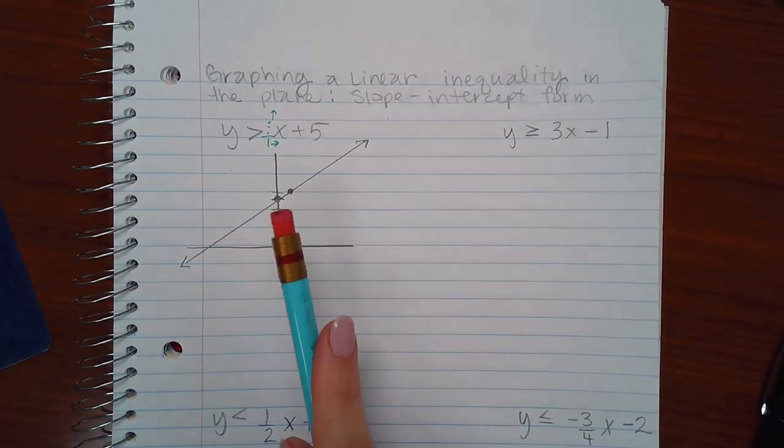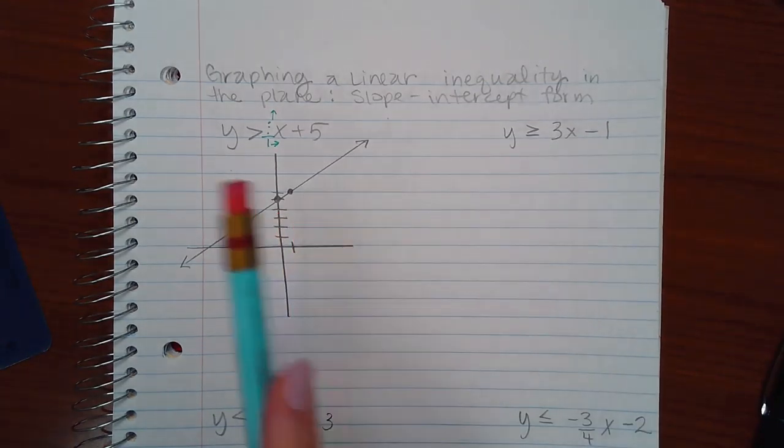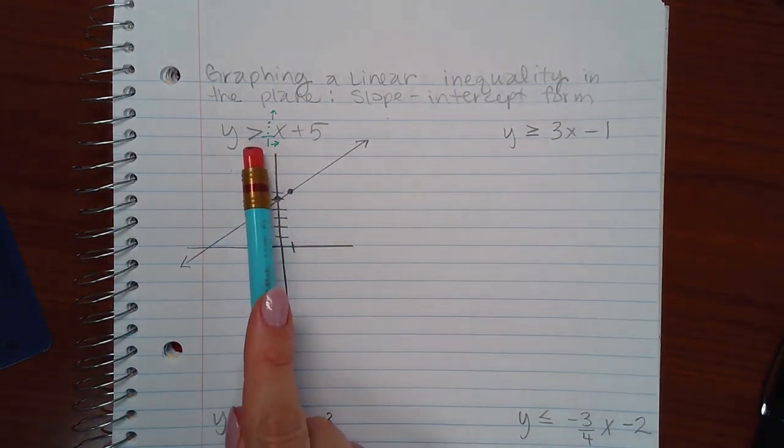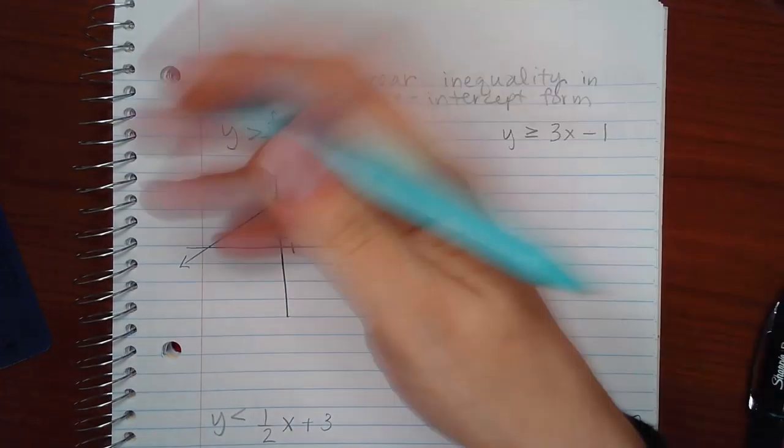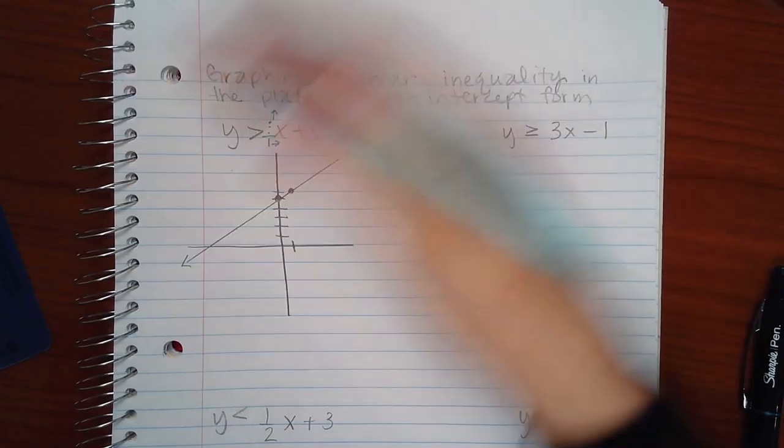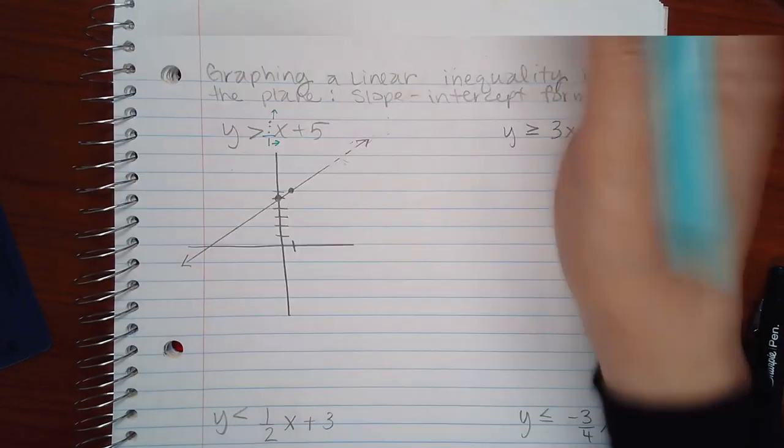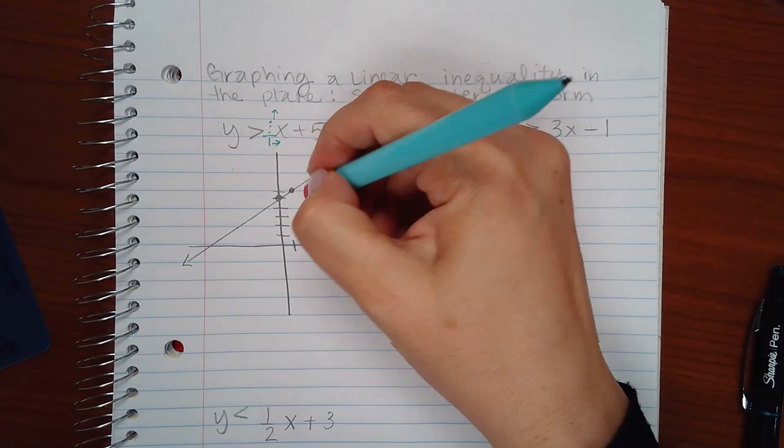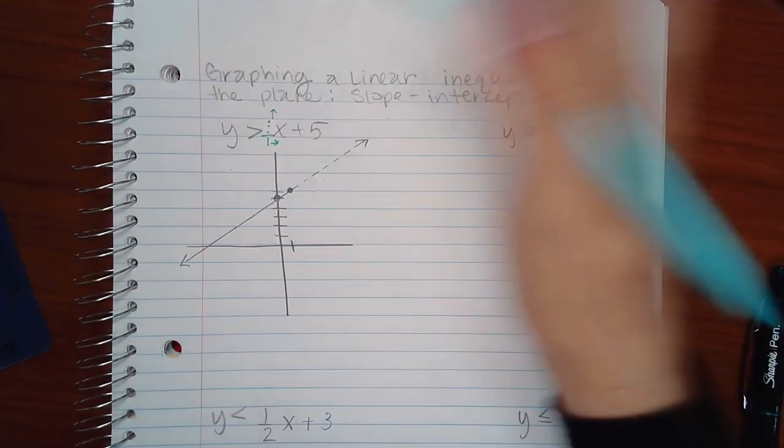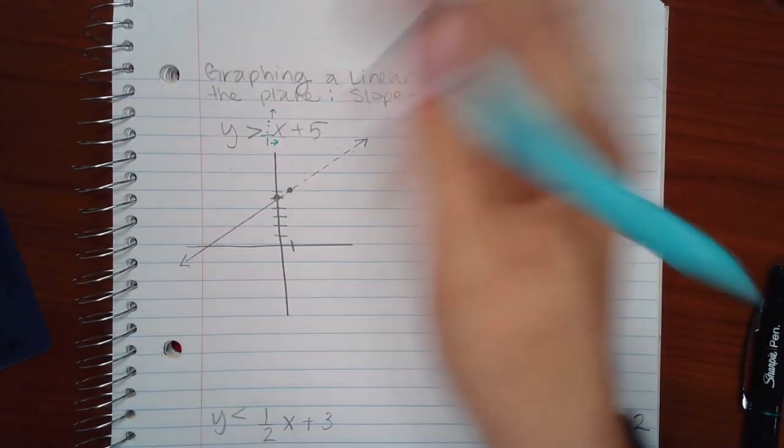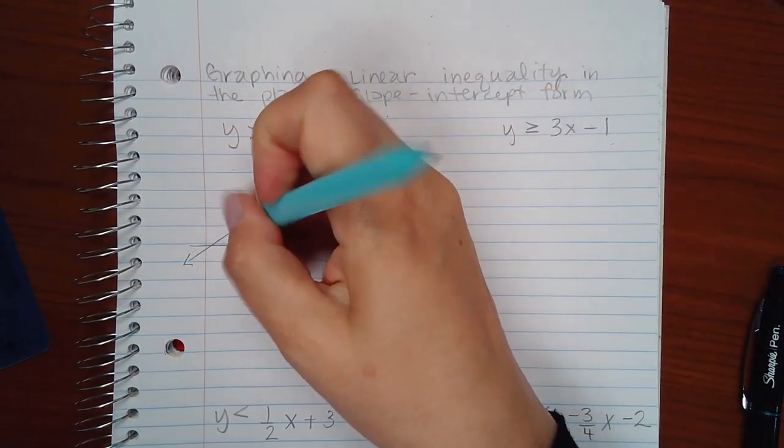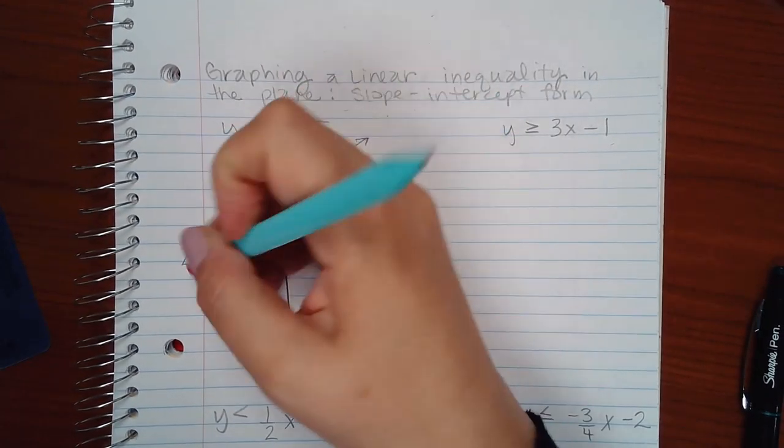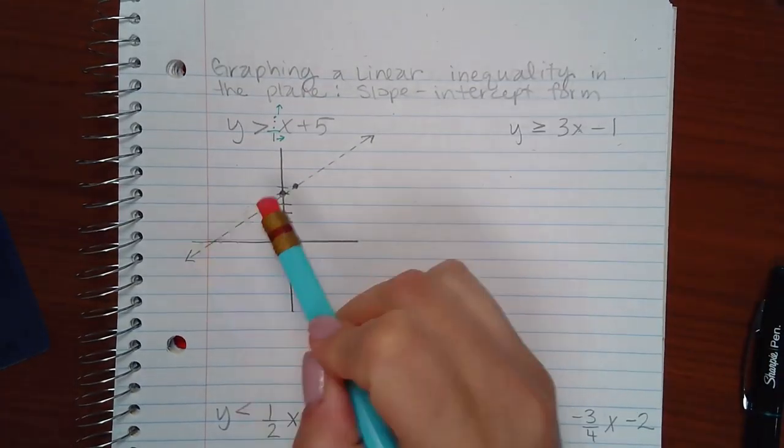Now, I drew a solid line because I was using my ruler. But this does not have an equal bar in it. So technically, this should not have been a solid line. And if I were graphing the problem in ALEX, I would make sure that I select the dotted line to plot this line. But it should be a dotted line because there is no equal bar.